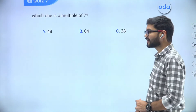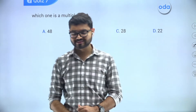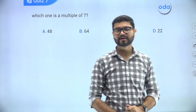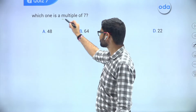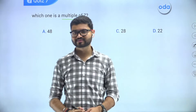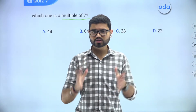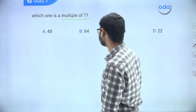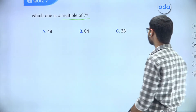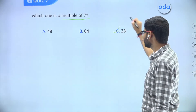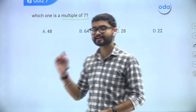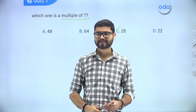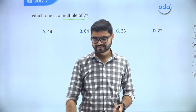Quiz time! Which one is a multiple of number seven? Four options: 48, 64, 28, or 22. Multiple of seven means the multiplication table of number seven. Let's read the table: seven ones are seven, seven twos are fourteen, seven threes are twenty-one, seven fours are twenty-eight. Since 28 comes in the table of number seven, it is a multiple of number seven. That's how easy this topic is.